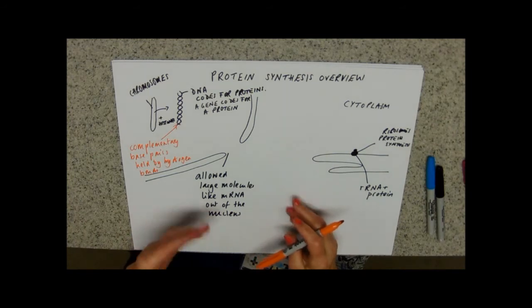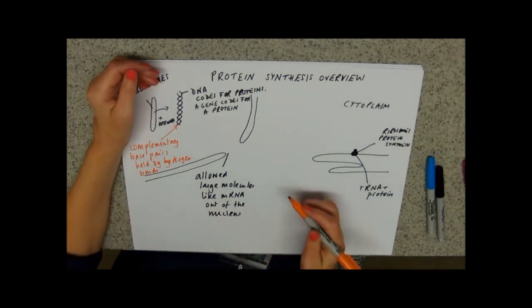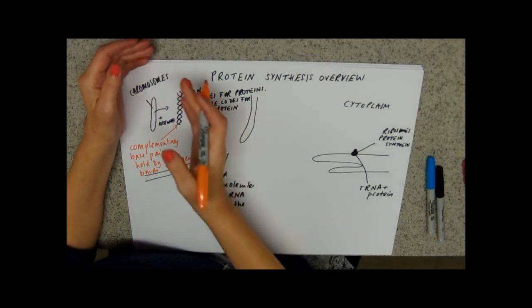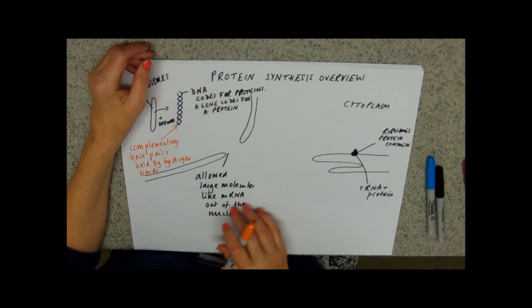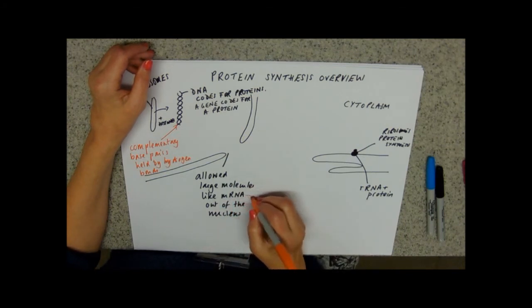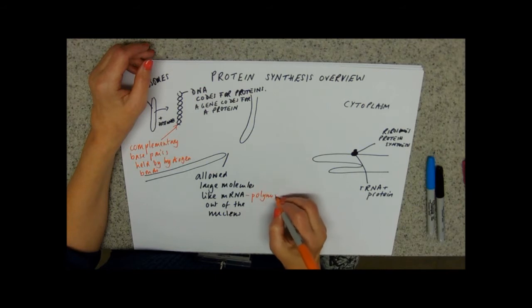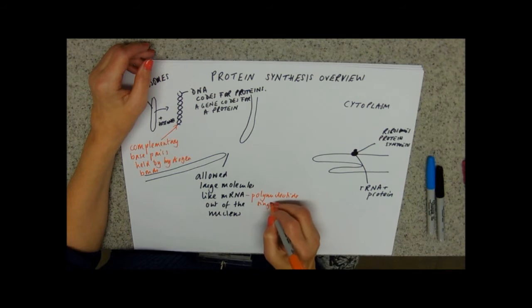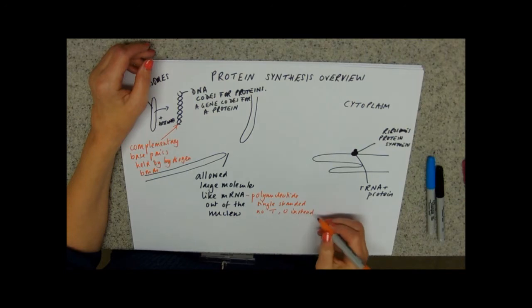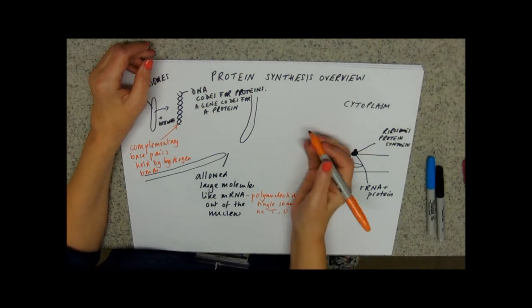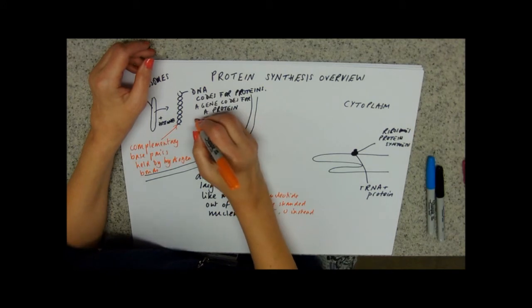And we also know from doing DNA replication that those hydrogen bonds can break and expose those bases. Now obviously this gives us a mechanism for copying the code. So our first stage - the DNA is really stuck inside the nucleus, but the RNA can get out. We know that RNA is a polynucleotide, and we know that it's single-stranded, and we know that it doesn't have T in it, it has U instead.